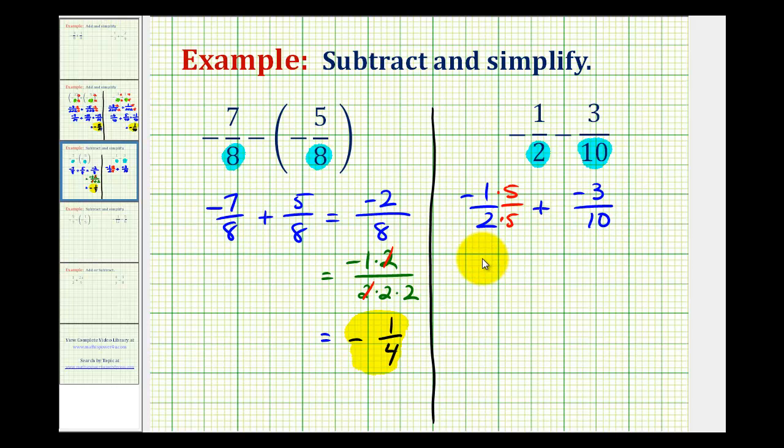This would be negative 5 tenths plus negative 3 tenths. And now we can add these fractions. The denominator stays the same. And we add the numerators. Negative 5 plus negative 3 is equal to negative 8.